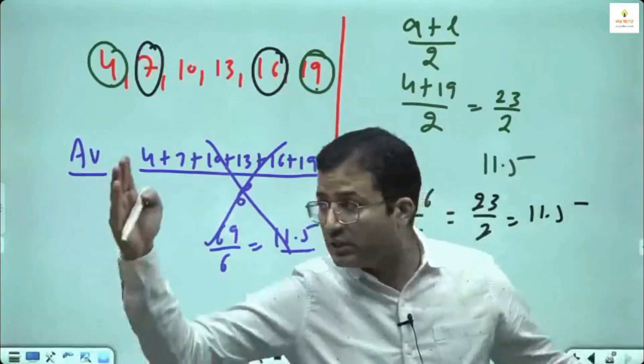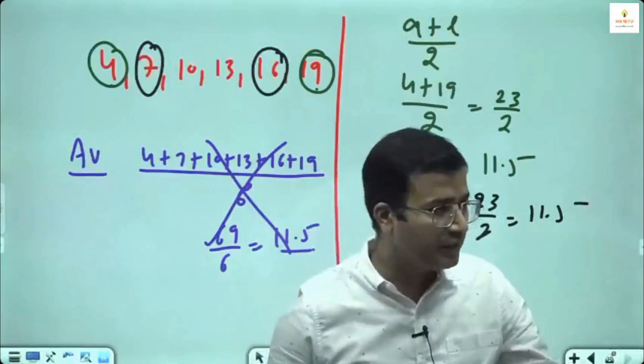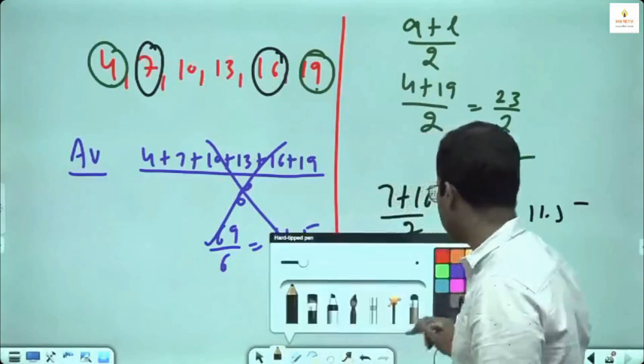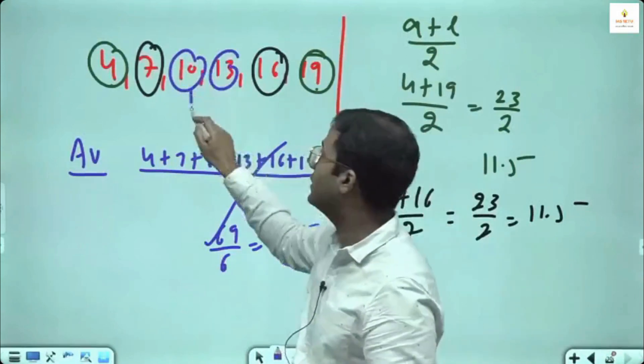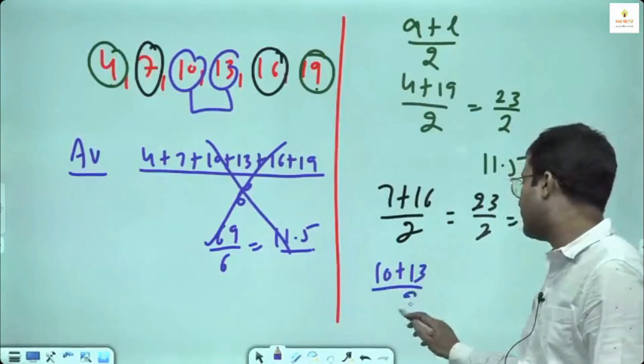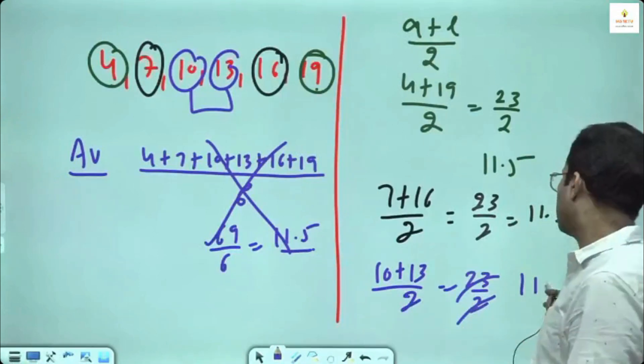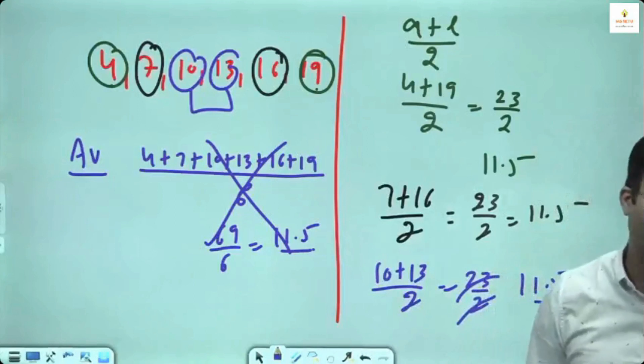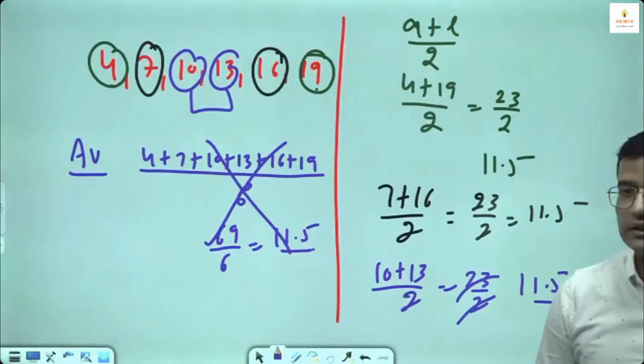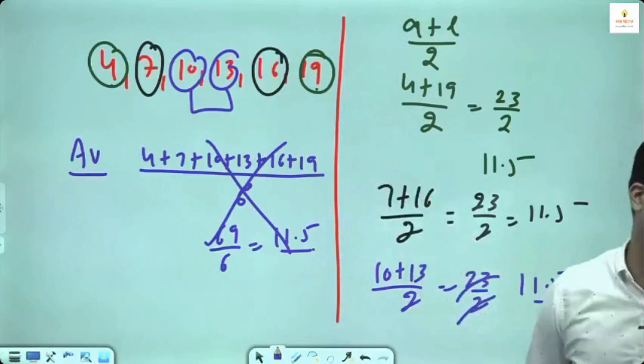Third term from the starting make pair with the third term from the last. 10 and 13 are also making a pair. 10 plus 13 divided by 2 also gives you the exactly same average. It is an observation on arithmetic progression. UPSC, you can check 2011 onward, nearly 70% of AP questions are asked on this concept.